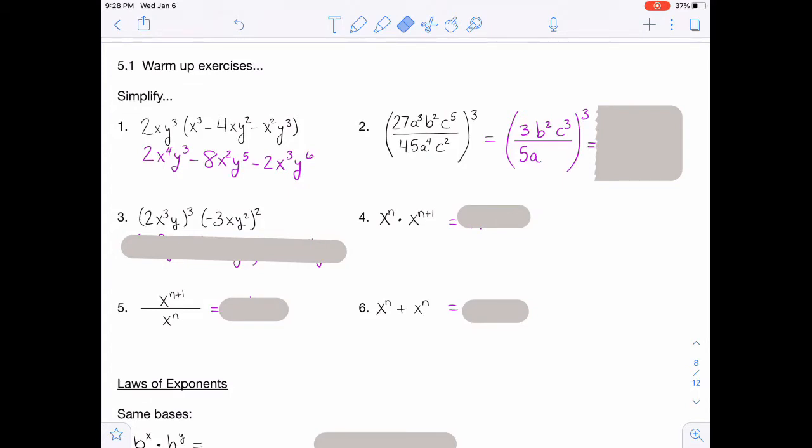Then when you go to cube all of that, you're going to end up with 27. You have to cube the 3 and each item inside. So you're going to have 27, b to the sixth, c to the ninth on the top. And then on the bottom, you're going to have 125a to the third.